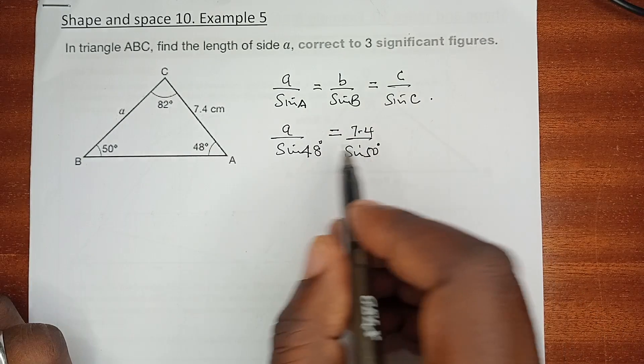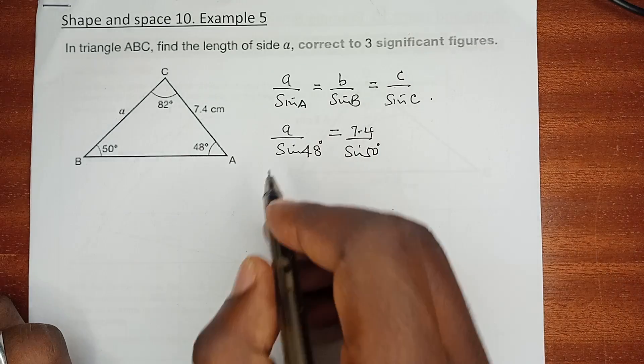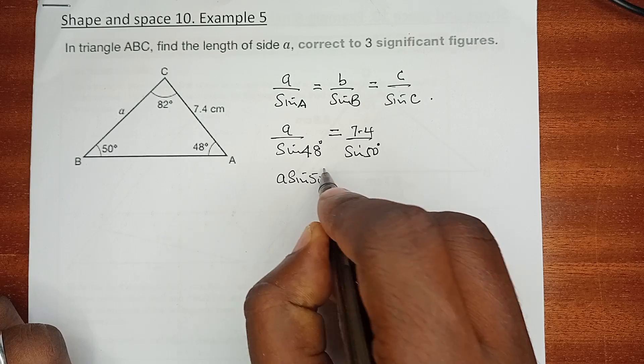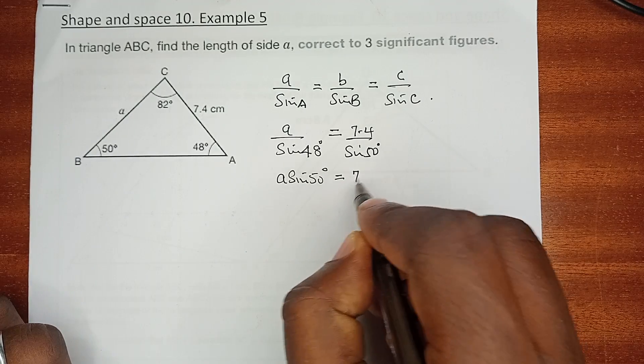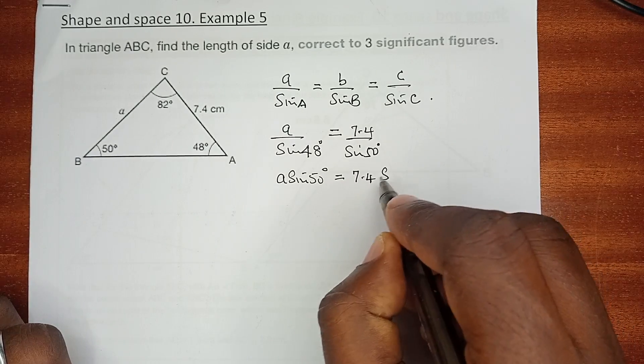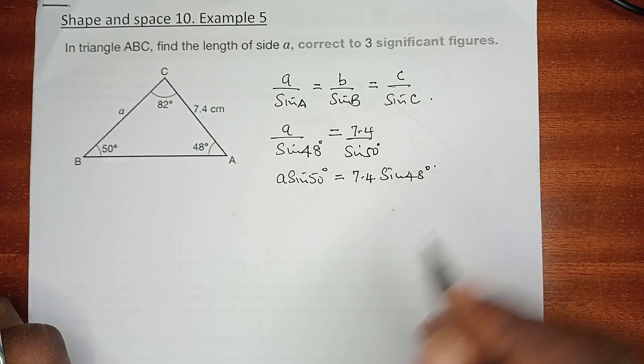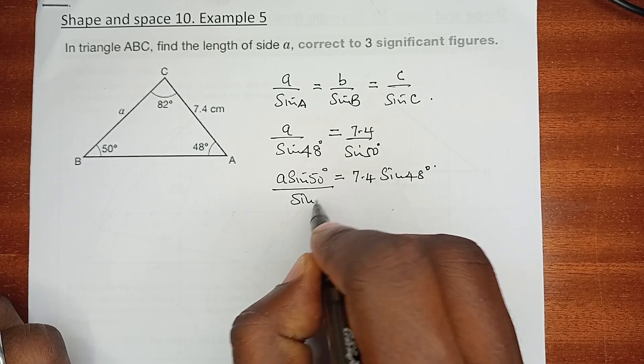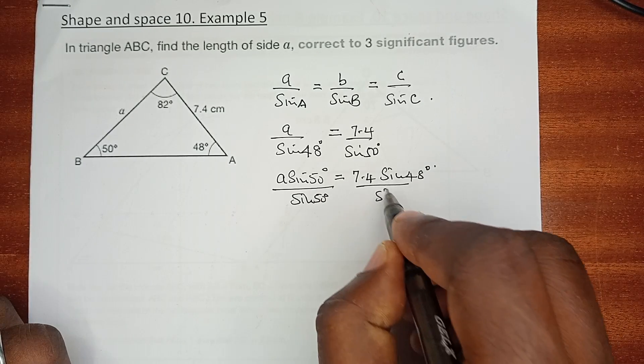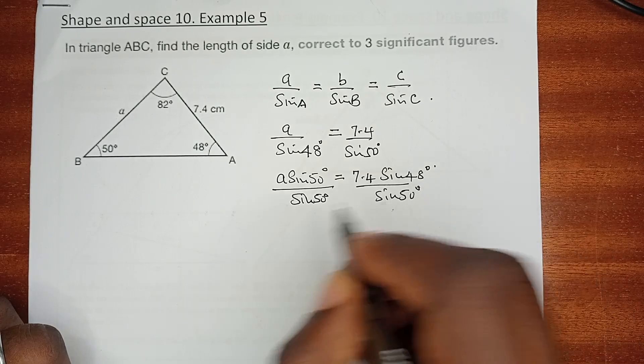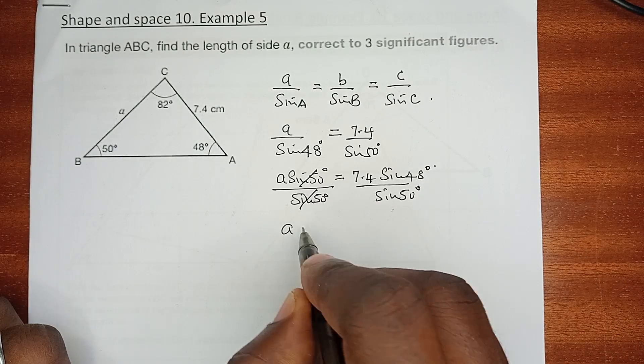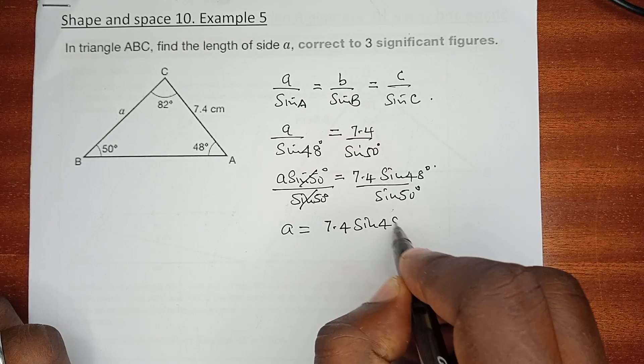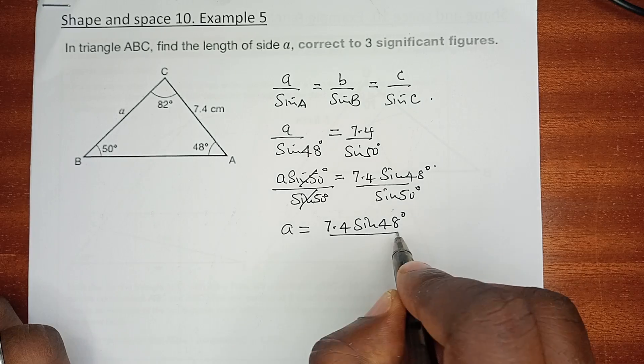Because these are two equal fractions, we can have a multiplied by the sine of 50 degrees equals 7.4 multiplied by the sine of 48 degrees. Dividing both sides by sine 50 degrees, this cancels out. We have a equals 7.4 sine 48 degrees divided by sine 50 degrees.